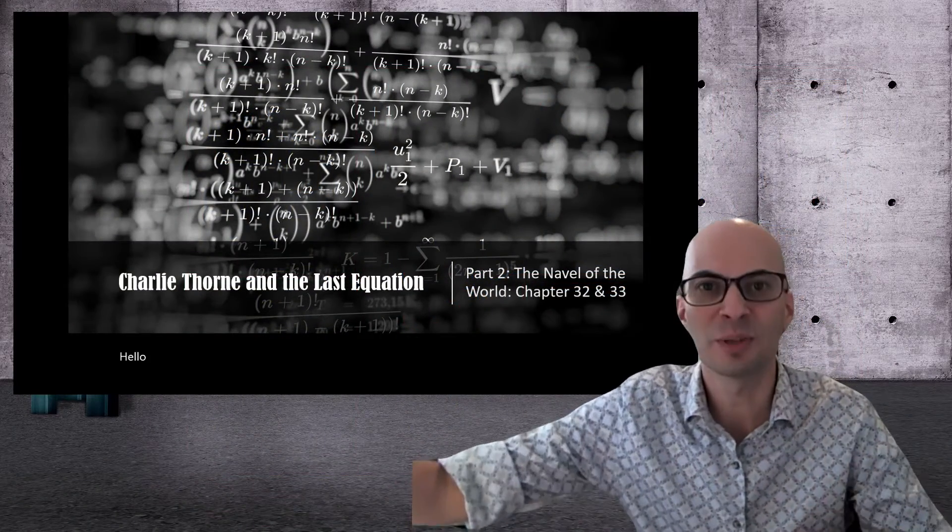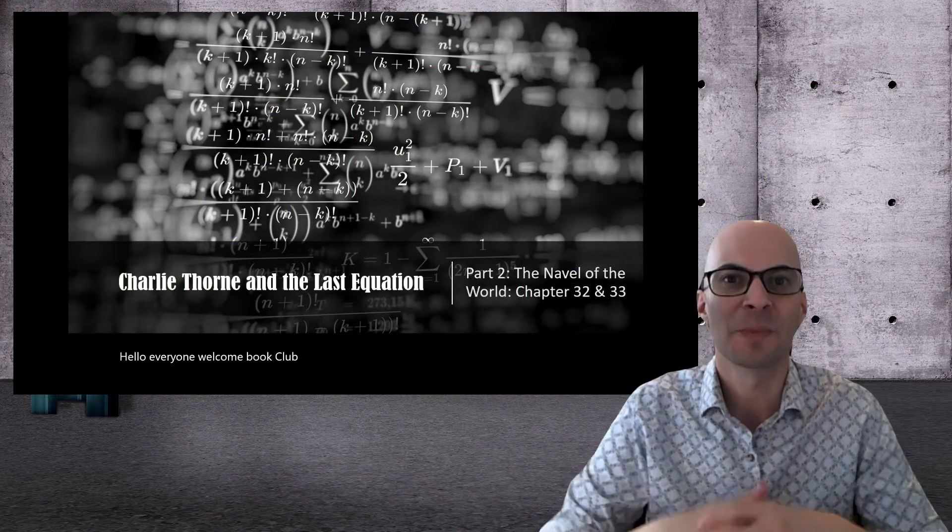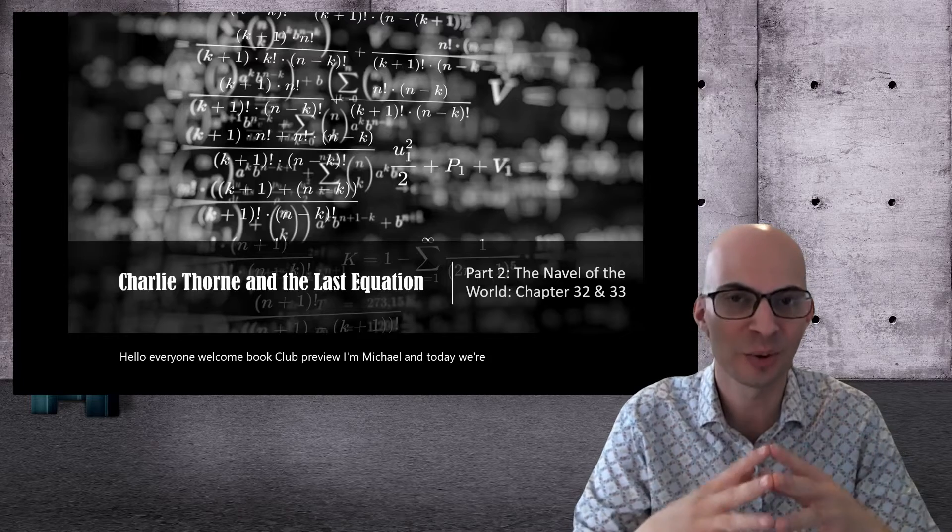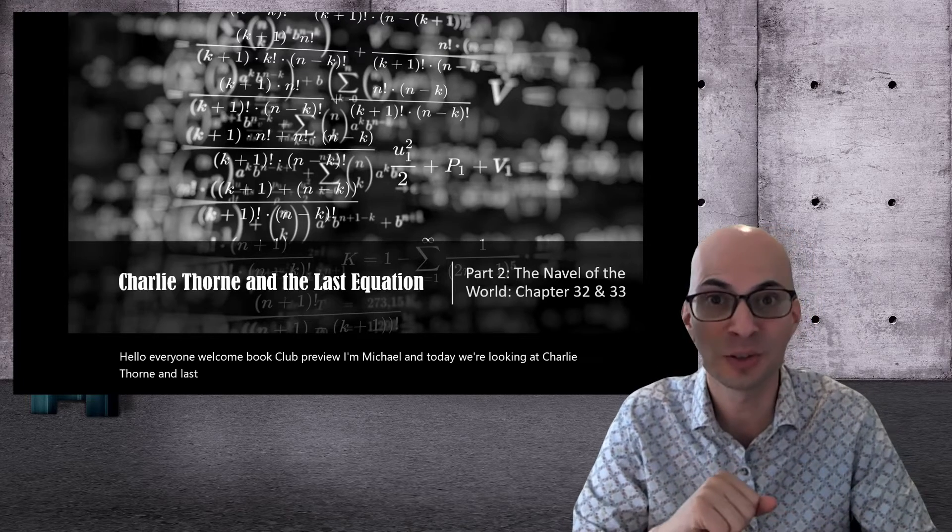Hello, everyone. Welcome to Book Club Preview. I'm Michael, and today we're looking at Charlie Thorne and the Last Equation, chapter 32 and 33.